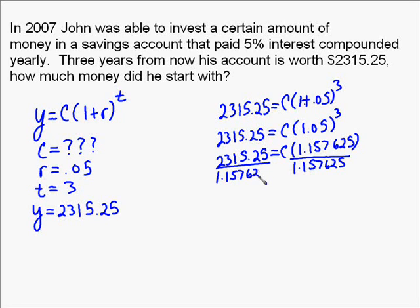So we're able to actually back out how much money we made and find out how much we started with. So he invested $2,000 for three years at 5%, and thus ended up with what was said in the problem, $2,315.25.